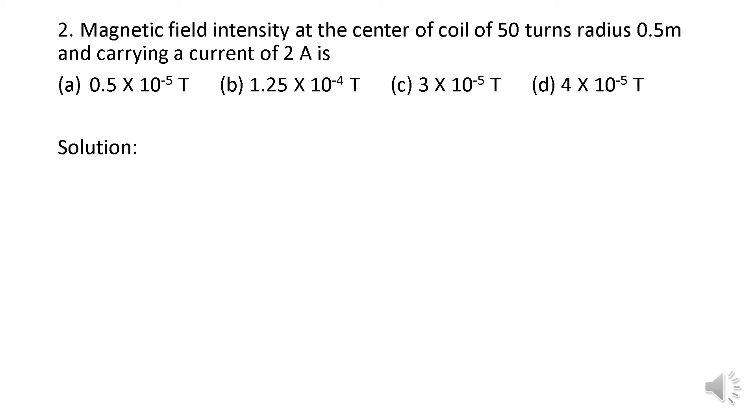We have a standard equation: μ₀ i n divided by 2r. Substitute the values: μ₀ is 4π × 10^-7, current i is 2 ampere, n is the number of turns which is 50, and radius is 0.5 meter. With simple calculation, we get 1.25 × 10^-4 Tesla as the correct answer. Therefore, option b is correct.